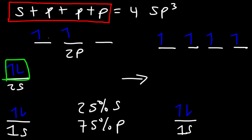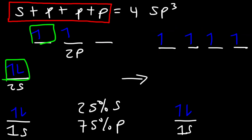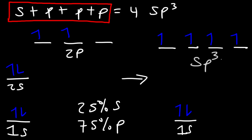Hybridization is basically mixing. If you mix water with orange juice, you get something in between — a hybrid. Similarly, if you mix s and p orbitals, you get something in between s and p. That's what hybridization is: mixing atomic orbitals. The result is four hybrid sp3 orbitals.